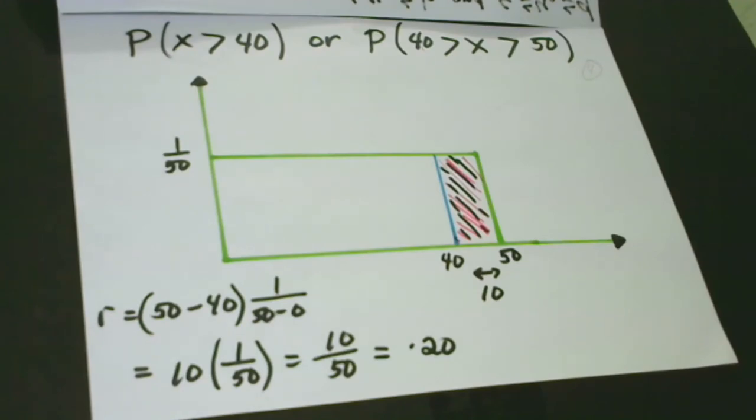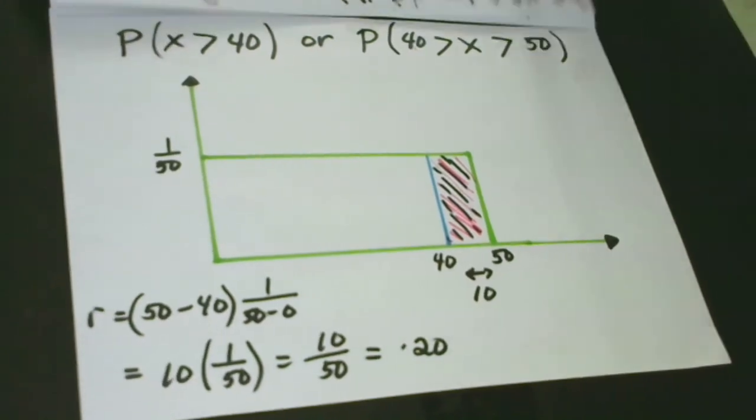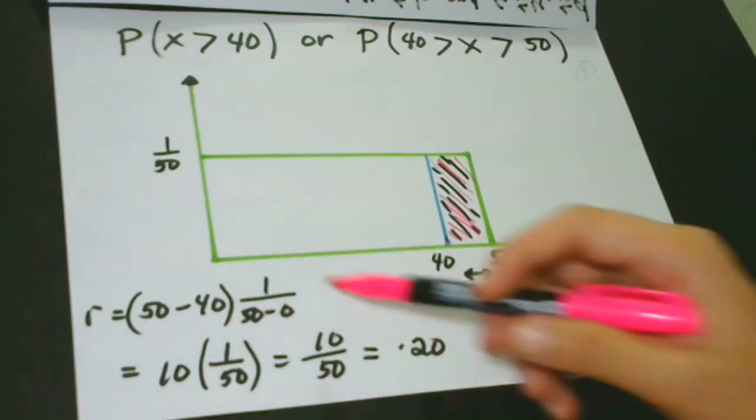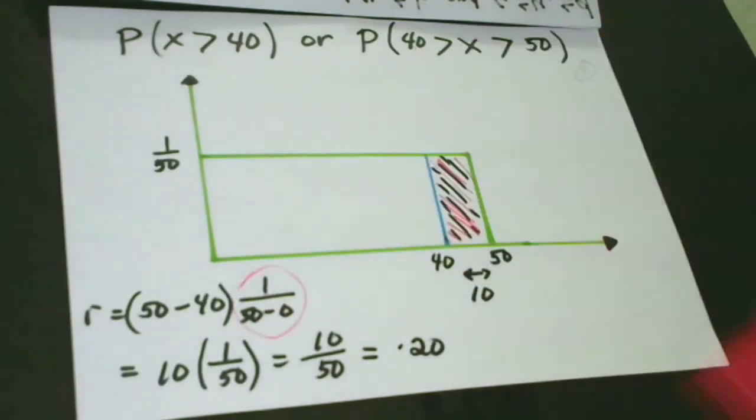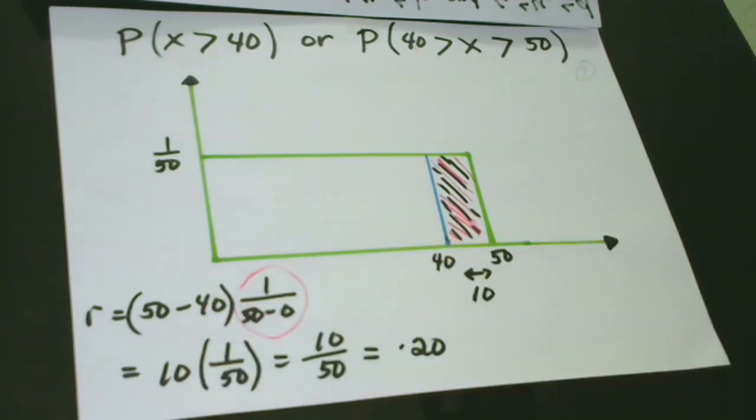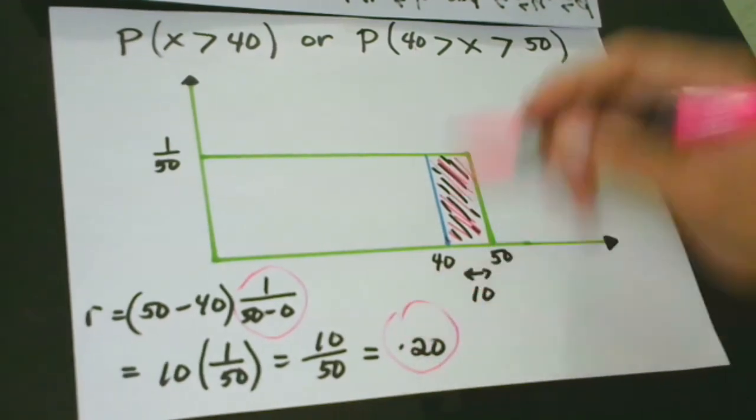Applying our formula here, this formula, we can find the value of this part of our rectangle. And how to do that? 50 minus 40 times 1 over 50. This is our first step. Remember our first step? 50 minus 40, that is 10, times 1 over 50. We have this 10 over 50, which is equal to 0.20. The probability that a person must wait at random more than 40 minutes is 0.20. This is our answer here.